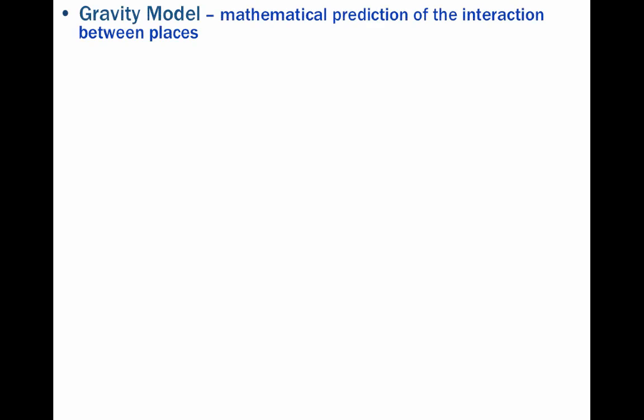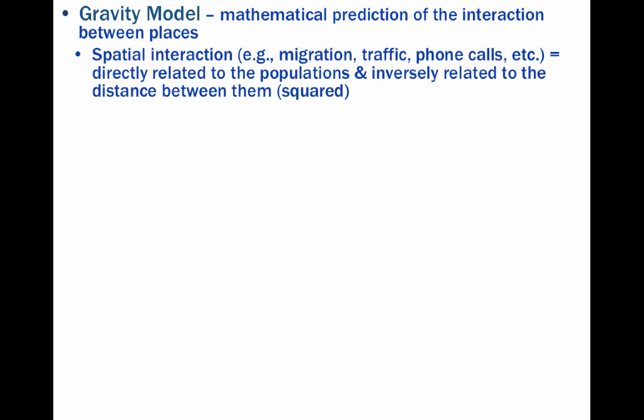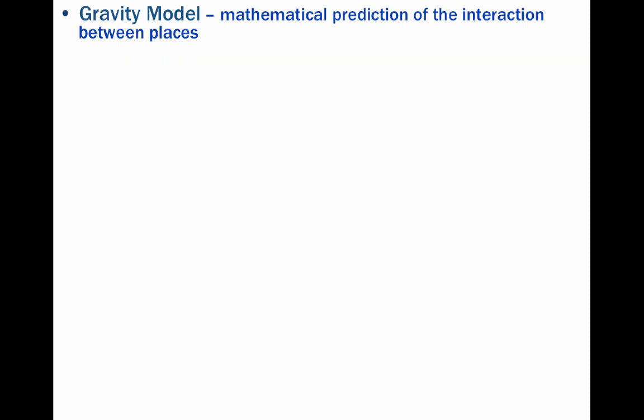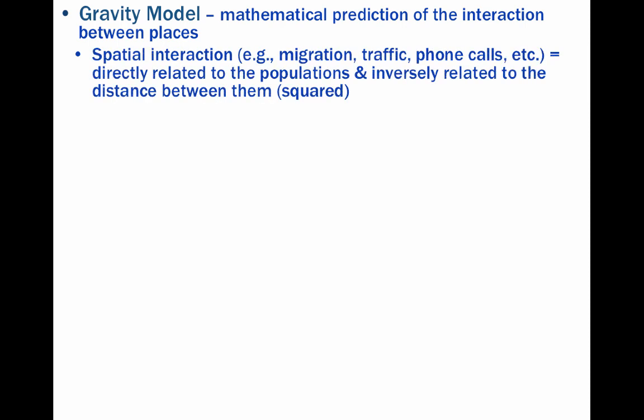Ravenstein was also an early observer of what is known as the gravity model of migration, which was derived from Newton's law of gravity and is a mathematical prediction of the degree of interaction between two places. The law essentially states that any two locations attract one another with a force that is proportional to the product of their importance and inversely proportional to the square of the distance between them. So interaction can be calculated through migration, automobile traffic, phone calls, and so on.